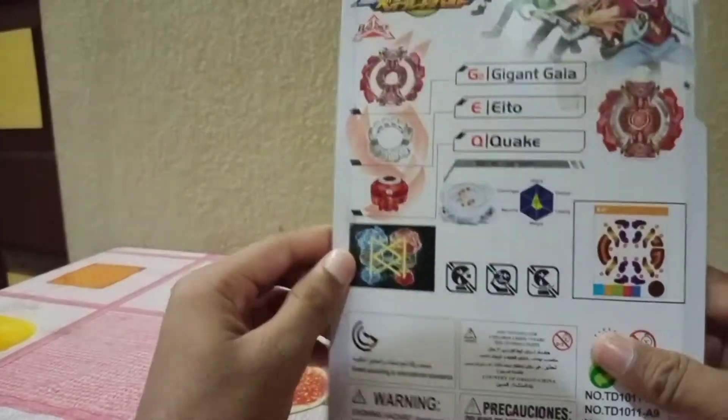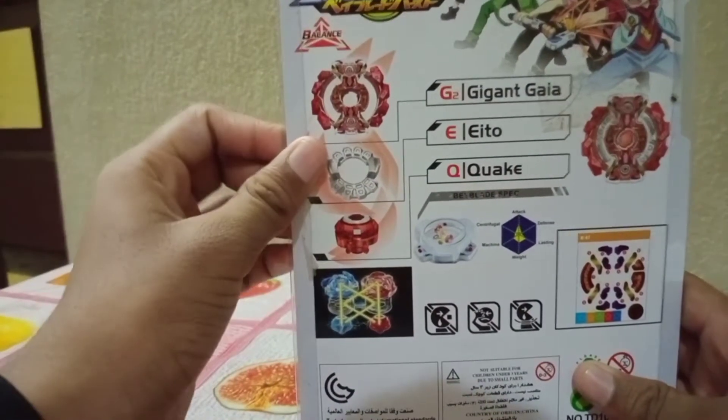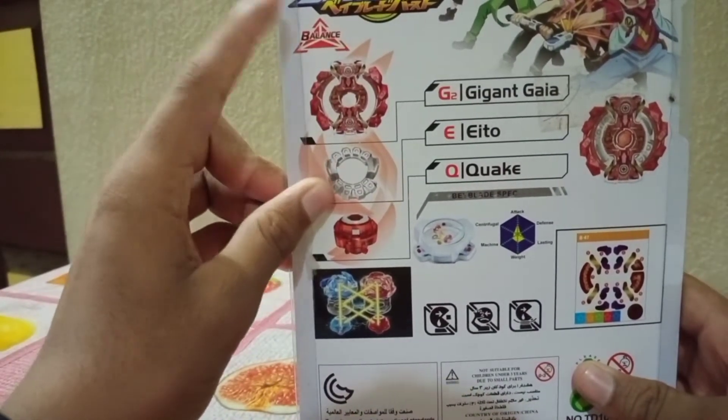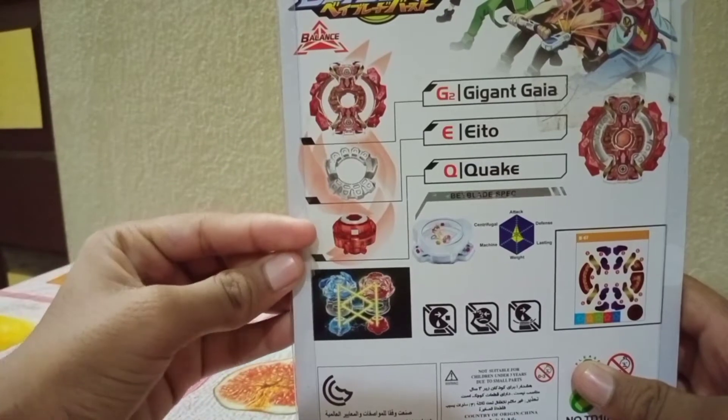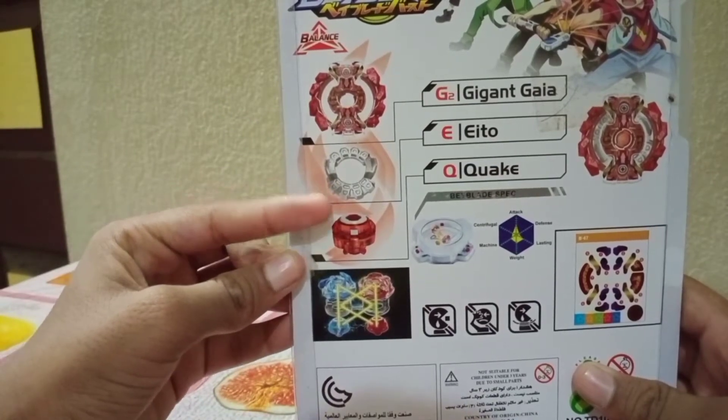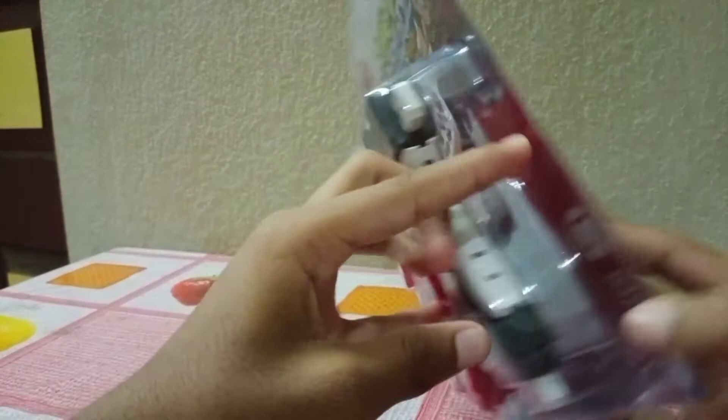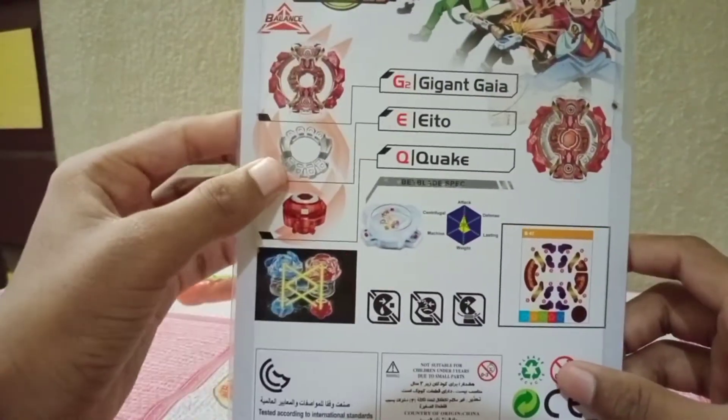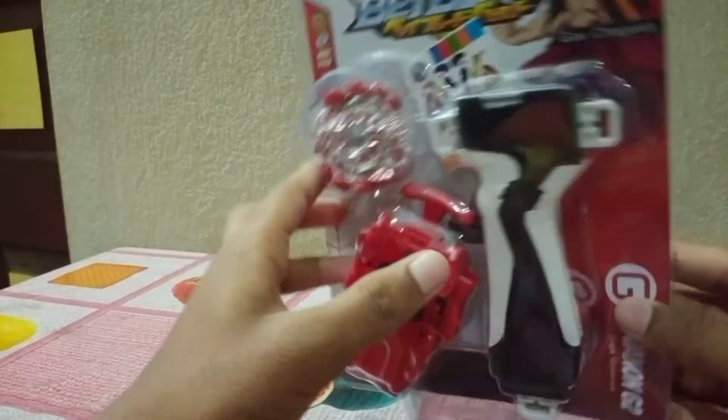Moving on to its details, the layer name is Giga Giga which is correct, but the disc and the driver are not correct. The driver is Jutta and the disc is 8. Anyways, let's unbox it.